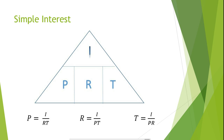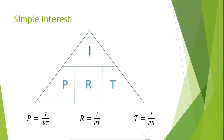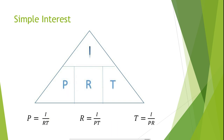So if we want to find the formula to solve for the principal of an investment that earns simple interest, all we need to do is cover up P, giving us interest divided by rate times time. If we want to find the formula to solve for the rate, all we need to do is cover up R, giving us interest divided by principal times time. If we want to find the formula to solve for time, all we need to do is cover up T, giving us interest divided by principal times rate.